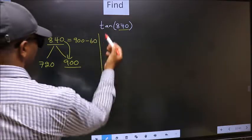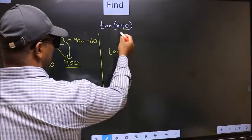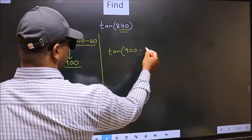So this will become tan. In place of this, now we should write 900 minus 60.